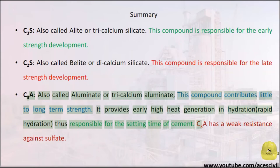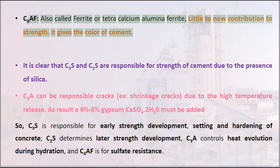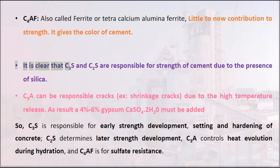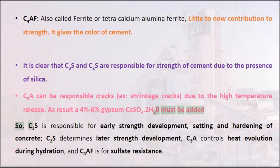C3A undergoes rapid hydration and is thus responsible for the setting time of cement. C3A has weak resistance against sulfate. C4AF, also called ferrite or tetracalcium aluminoferrite, has little to no contribution to strength but gives the color of cement. It is clear that C3S and C2S are responsible for the strength of cement due to the presence of silica. C3A can be responsible for shrinkage cracks due to high temperature release. As a result, 4–6% gypsum (CaSO4·2H2O) must be added.